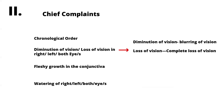Now, what are the chief complaints? Always list them in chronological order — what symptom started first, then the second, then the third. For example, if a patient had trauma 20 days back, then noticed diminution of vision, then pain afterward — that history should be presented in that chronological order.